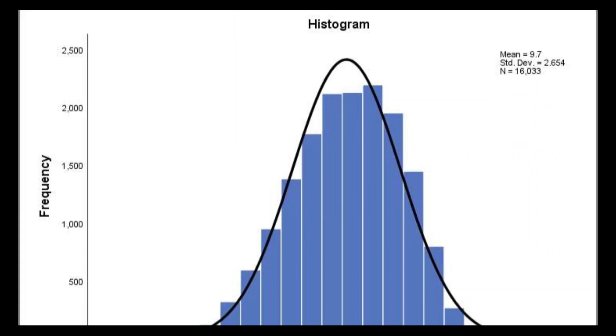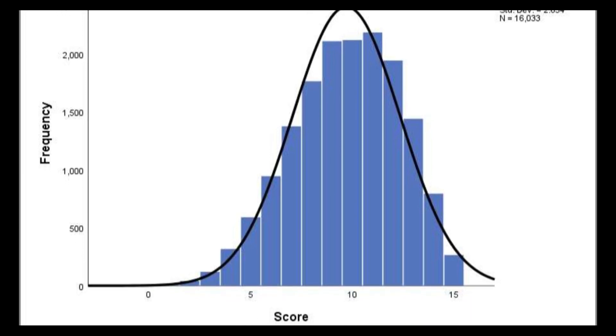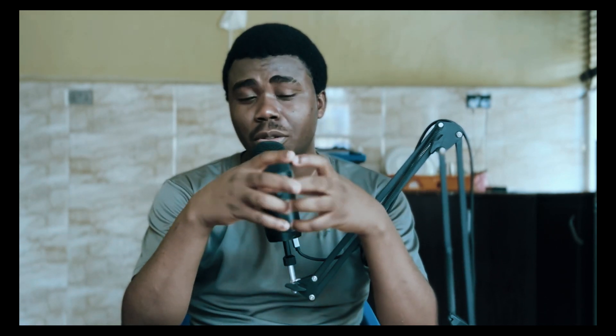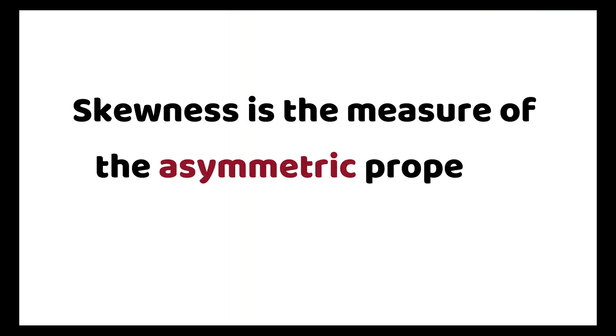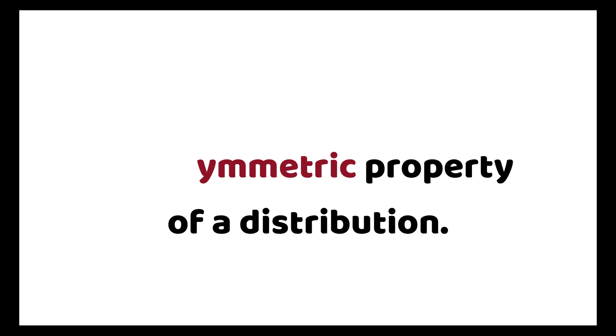If you plot the histogram for any data set, you can see the shape of that data set by having an outline, and from this you can tell whether the data set is symmetric or not. Knowing the distribution of your data set can bring out two important details: skewness and kurtosis. This video is focused on skewness, and subsequent videos will focus more on kurtosis.